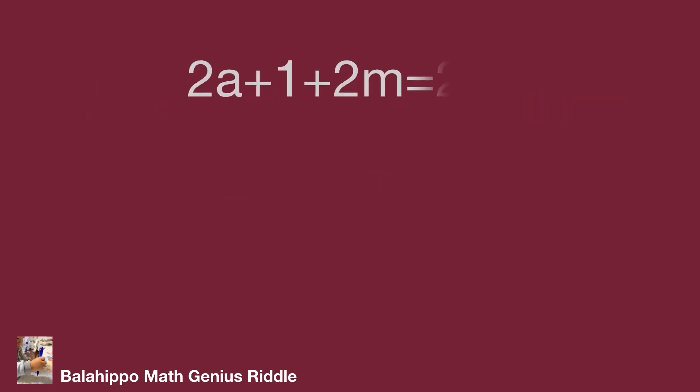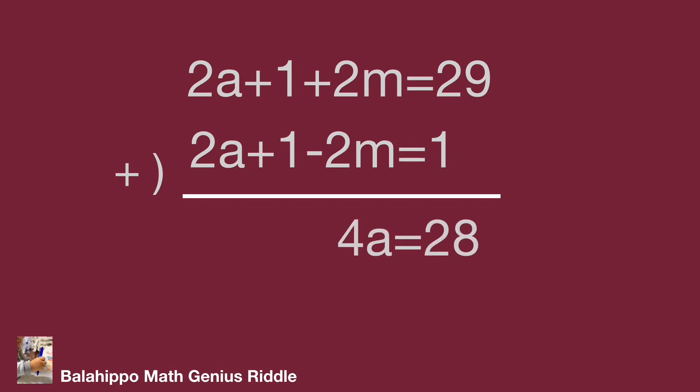This is 2a plus 1 plus 2m equals 29 and 2a plus 1 minus 2m equals 1. Add up these two equations, then get 4a plus 2 equals 30, so a equals 7.